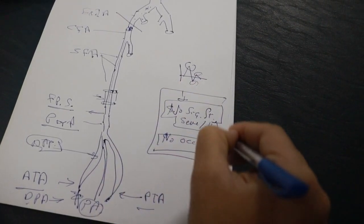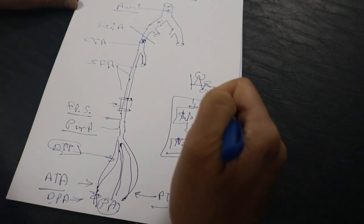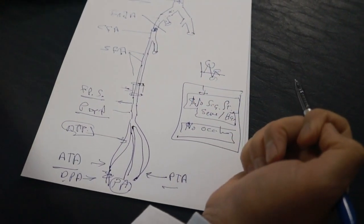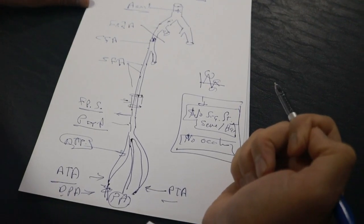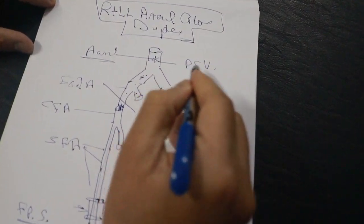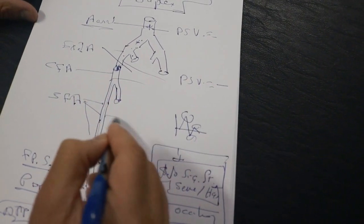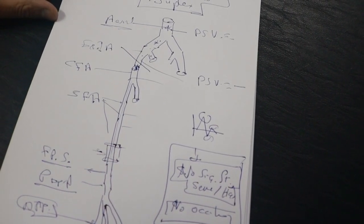If you need to add more accurate and more precise and more objective way, you can write the peak systolic velocity. How much the peak systolic velocity at each segment, the peak systolic velocity.